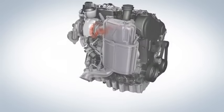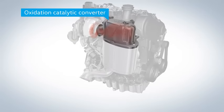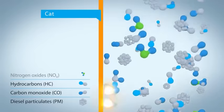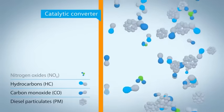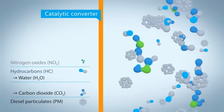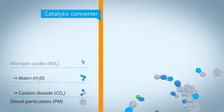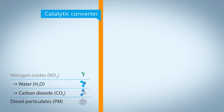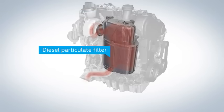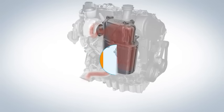In this compact unit, the exhaust gas encounters the oxidation catalytic converter. This converts the carbon monoxide and hydrocarbons left over after the combustion process. The products? CO2 and water. In the next step, the exhaust gas reaches the diesel particulate filter, which eliminates the soot.